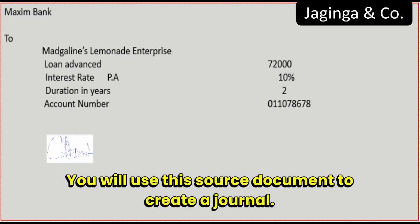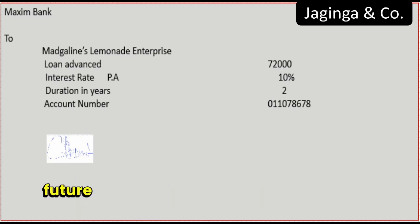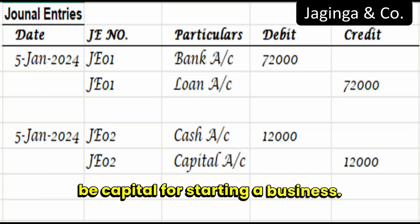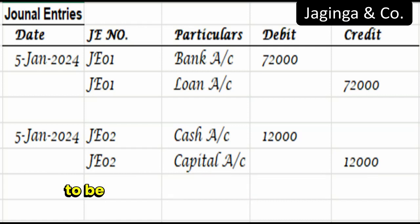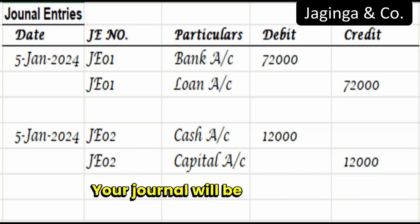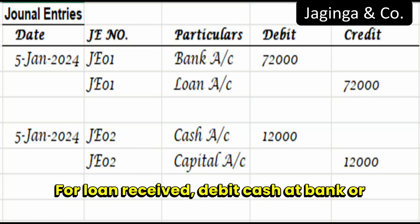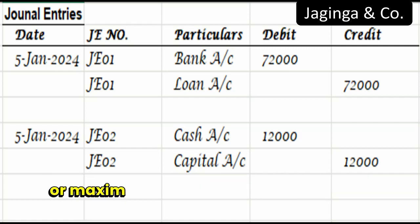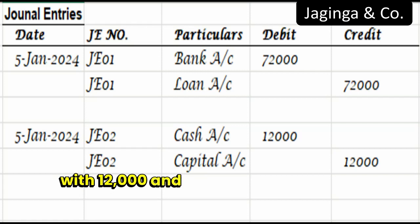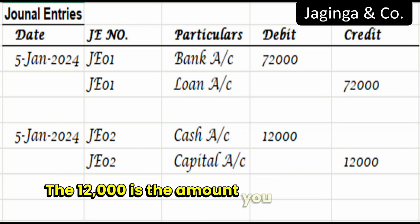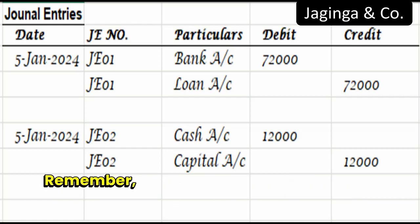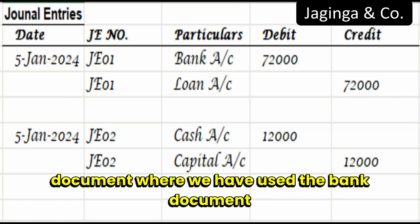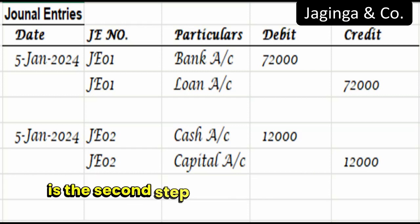You will use this source document to create a journal. The loan is a liability to be paid in the future, and the cash you have received will be capital for starting a business. Your journal will have a journal number, date when it is created, description or particulars, and the accounts to be debited and credited as shown. For the loan received, debit cash at bank or bank account with $72,000 and credit loan account or Maxime Bank with $72,000. For cash from your pocket or savings, debit cash account with $12,000 and credit capital account with $12,000. The $12,000 is the amount you are injecting into Magdalene's Lemonade Enterprise, so it becomes the capital or owner's equity. Remember, the accounting process starts with the source document, and we have used the bank document as the original document to create a journal, which is the second step in the accounting process.